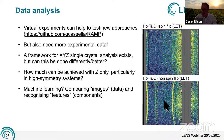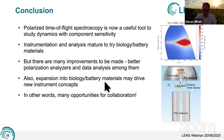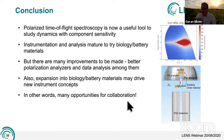In conclusion, polarized time-of-flight spectroscopy is now a useful tool to study dynamics with component sensitivity — separating coherent and spin-incoherent scattering. The instrumentation and analysis are now mature enough to try biology and battery materials, but many improvements remain to be made, including better analyzers and data analysis. If polarized quasi-elastic neutron scattering takes off, it may drive new instrument concepts such as polarization analysis on indirect geometry time-of-flight spectrometers. There are many opportunities for collaboration within LENS and internationally, with contributions from LENS institutions across the development of this technology.